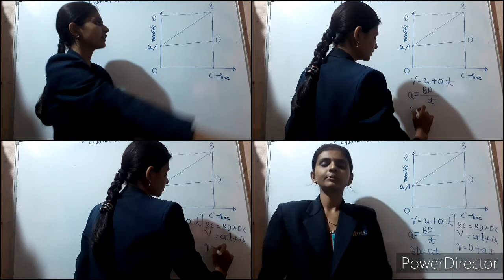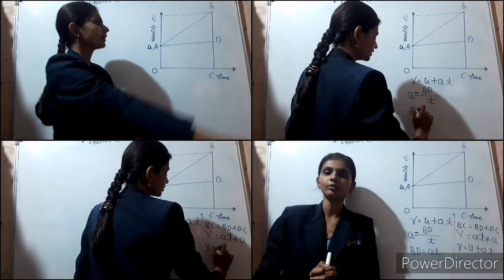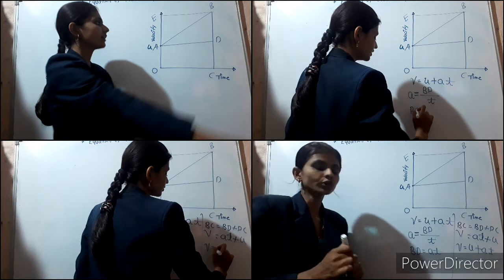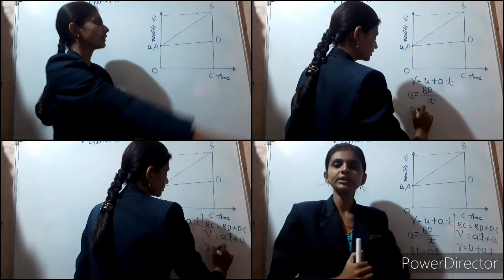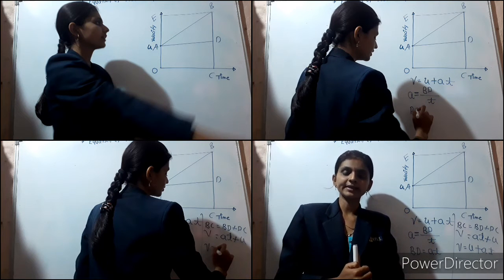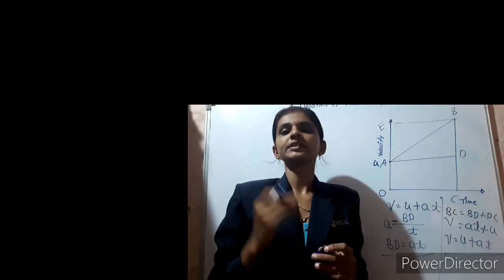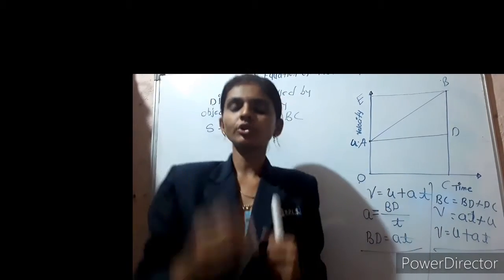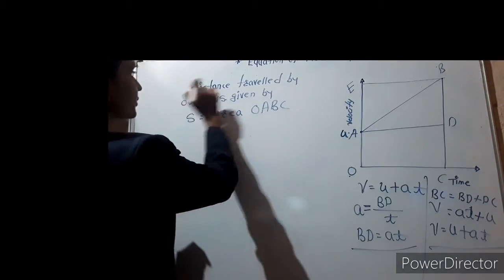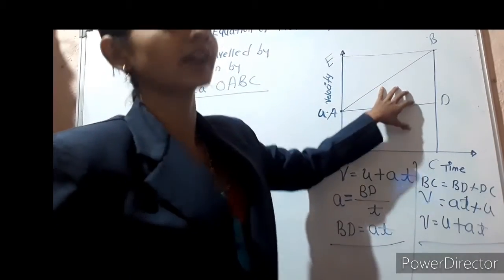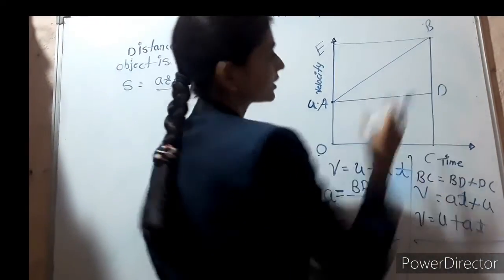Now it is time to find out the second equation of motion. In this second equation we have to calculate the total distance. Let us consider that the object covers the total distance s within a time t with uniform acceleration a. The total distance covered by the object is the area enclosed by oabc. The area of oabc — oabc is a trapezium, but we can see that one rectangle and one triangle are present in that trapezium.